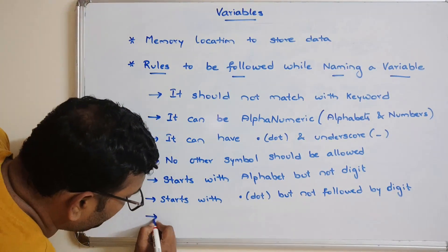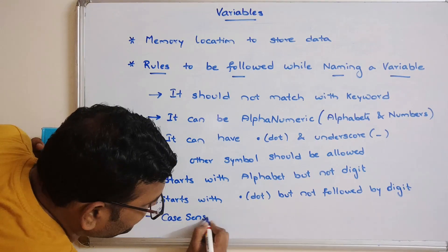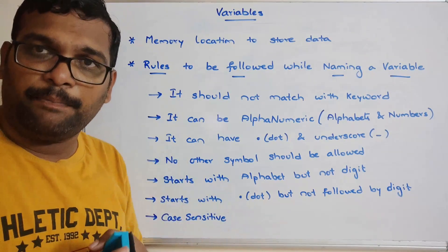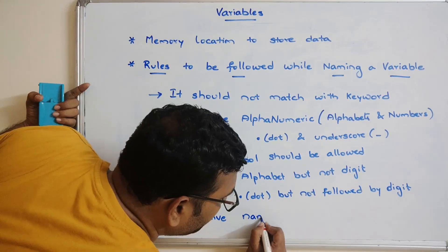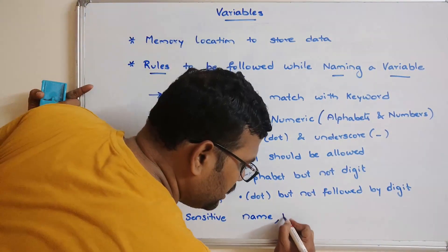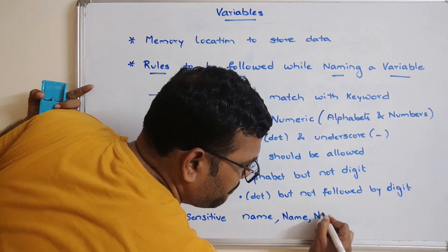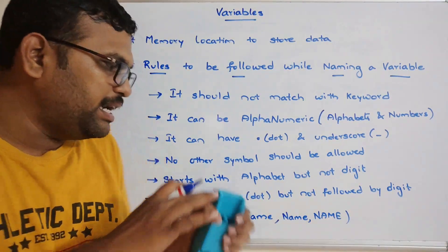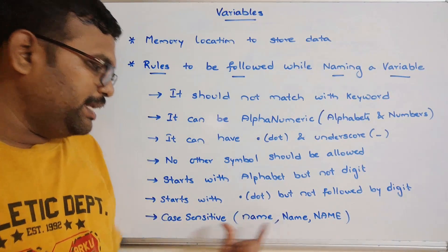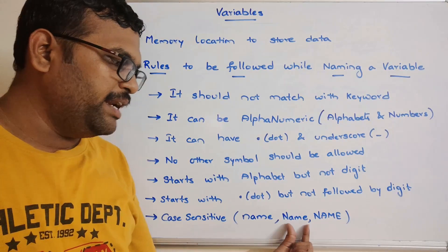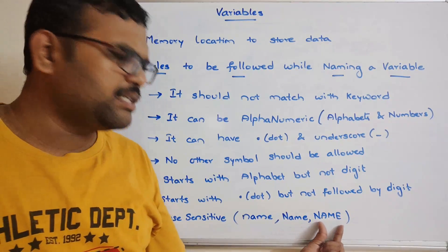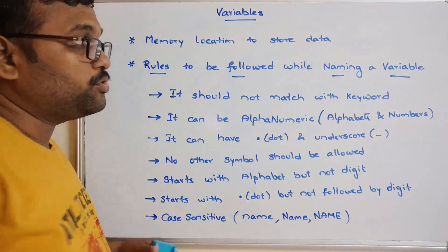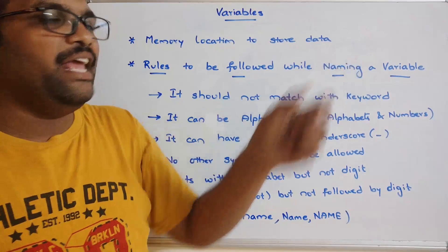The last and important rule is that R is case sensitive. Case sensitive means there is a difference between lowercase and uppercase characters. For example, if you take some name as a variable, three versions — all lowercase, first letter capitalized, and all uppercase — are treated as three different variables. So all three are different. These are the rules we have to follow while naming a variable: no keyword match, alphanumeric with dot or underscore only, starts with alphabet or dot (not digit), and case sensitive.